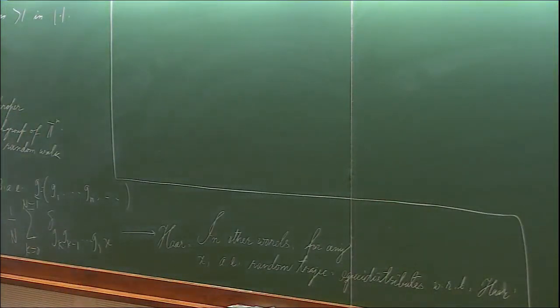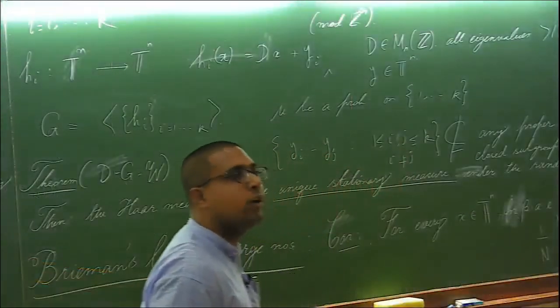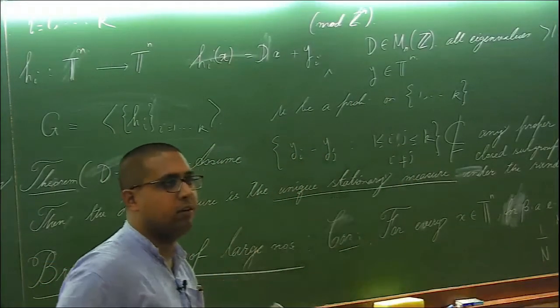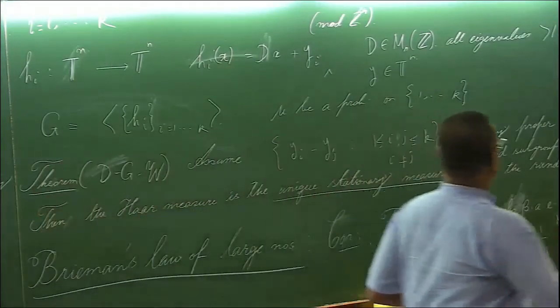Which is the topology? In other words, for every continuous function, this converges to an integral. Torus is compact already. Okay. So let's now come to the self-similar sets.